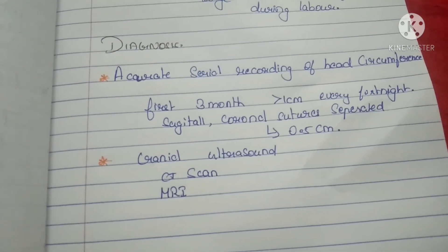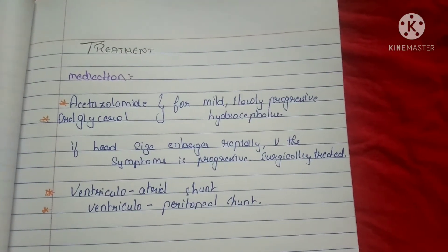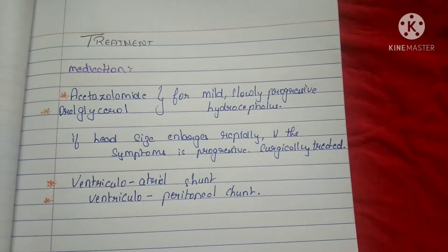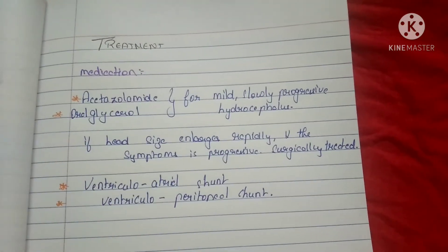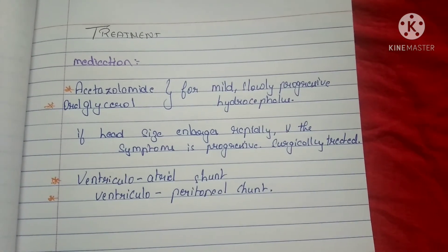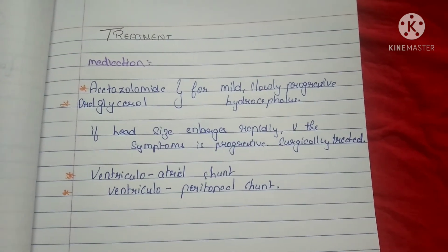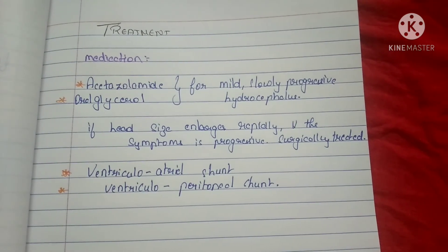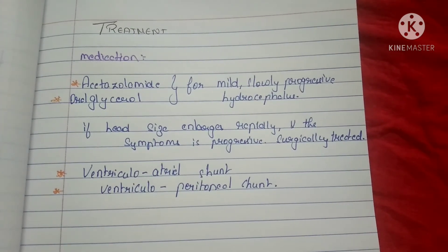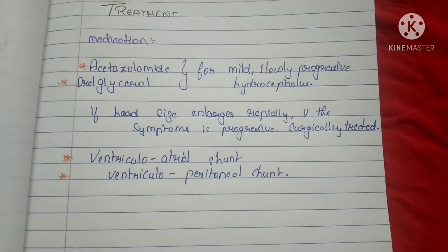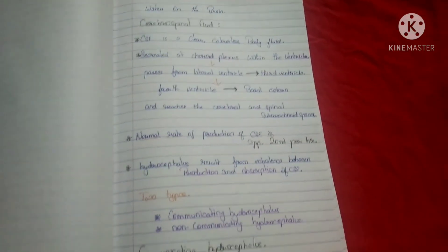Diagnosis can be done using cranial ultrasound, CT scan, and MRI. For treatment, in mild and slowly progressive hydrocephalus, medications such as acetazolamide and oral glycerol are given. If the condition is severe and rapidly progressive, surgical treatment is used: the ventriculoatrial shunt or the ventriculoperitoneal shunt, which drains CSF directly into the circulation or into the peritoneal cavity. The shunt must be maintained for life and revised as the child grows.